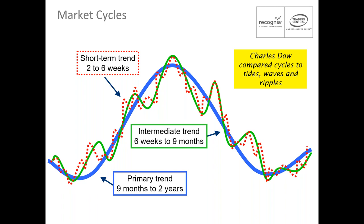Dow felt the primary trend lasted anywhere from nine months to two years, shown as the blue line. Superimposed is the intermediate trend, lasting six weeks to nine months. Further superimposed is the short-term trend in red, lasting two to six weeks. What's important is that in some places all three trends move in the same direction upward, while elsewhere the intermediate and short-term trends may move up while the primary trend moves down. Understanding where we are in each trend is critical to making the right trading decisions.